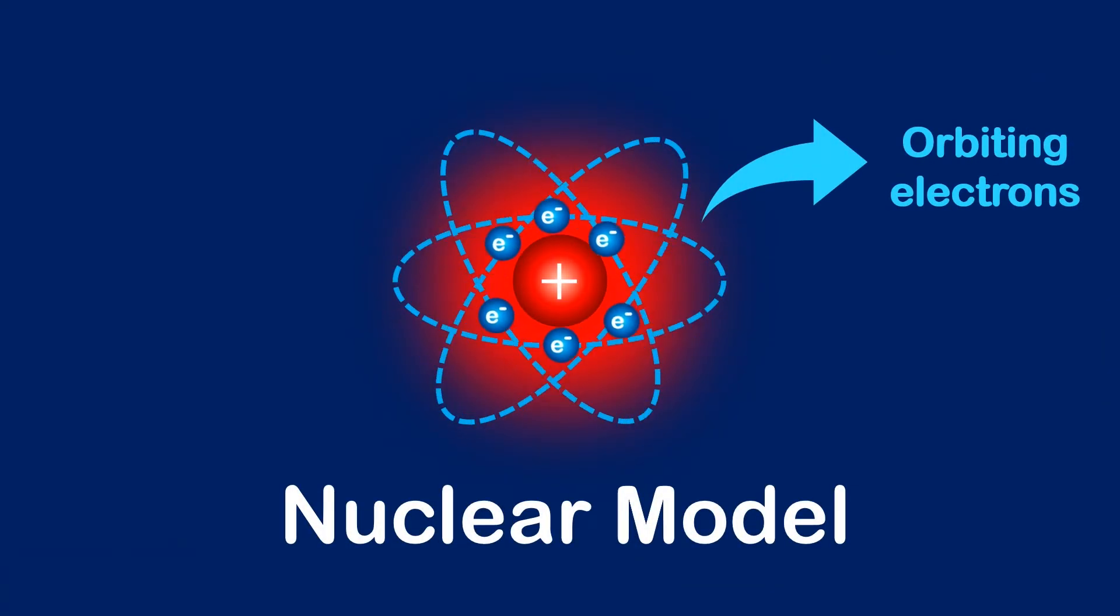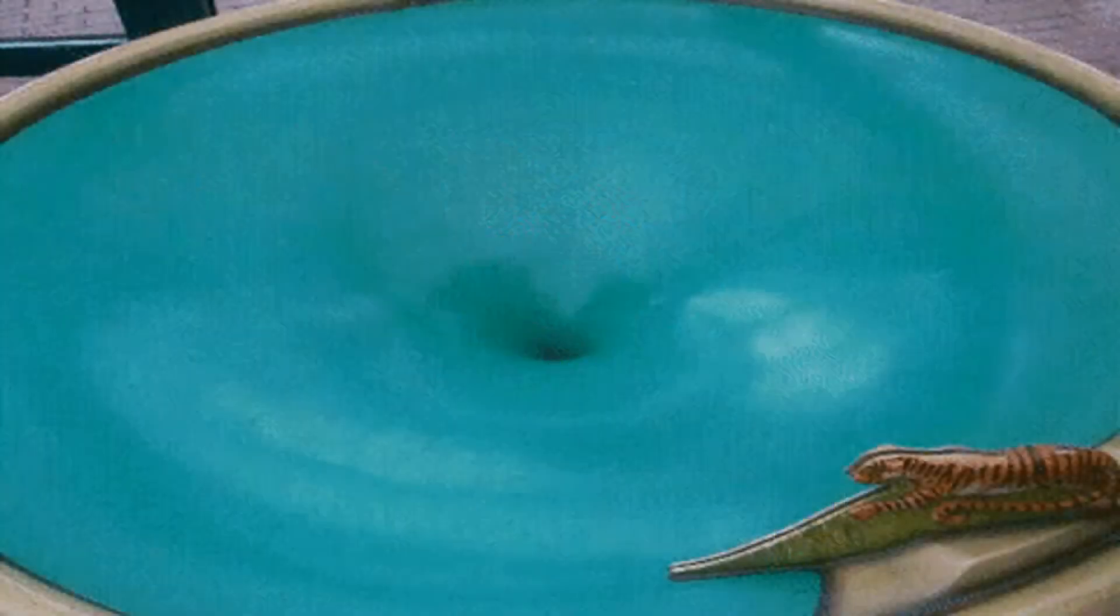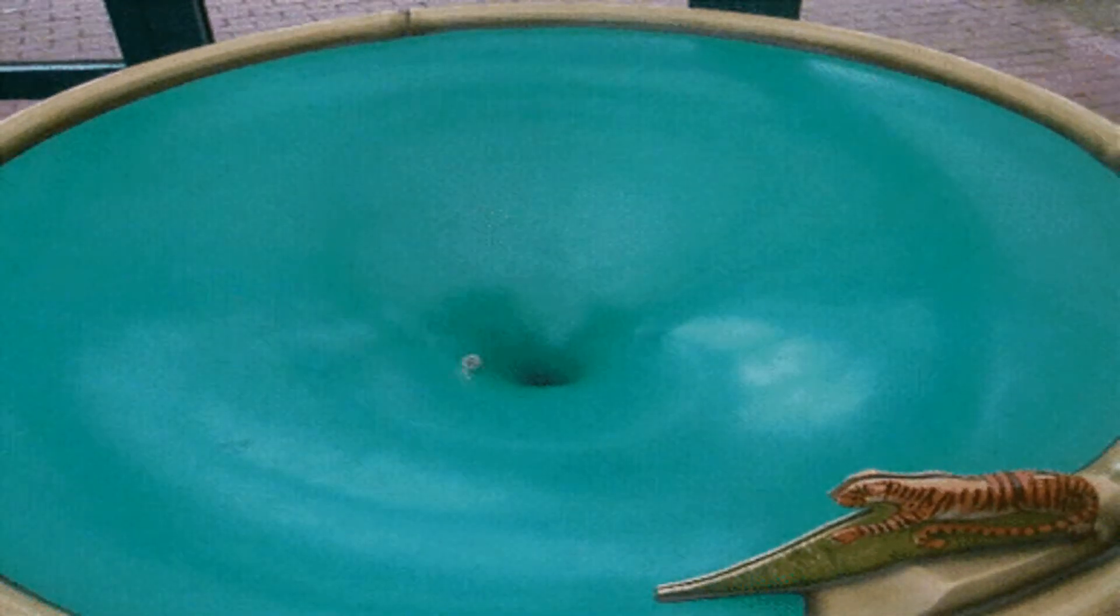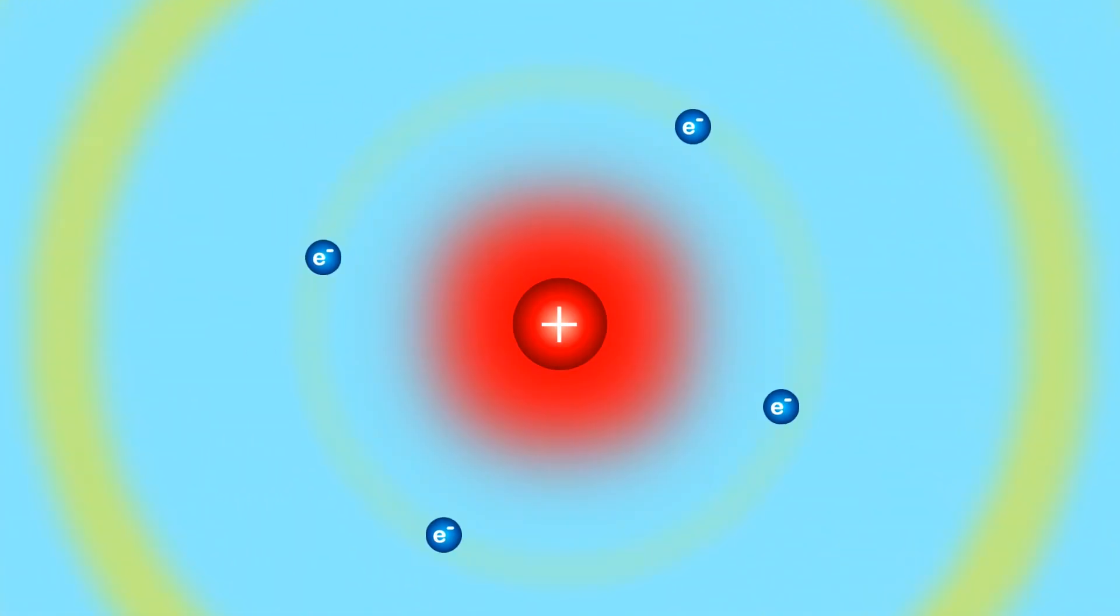with electrons orbiting the nucleus like planets orbiting the sun. But there was a problem with this model. In the same way that a coin loses energy as it spirals toward the center of a coin funnel, the orbiting electrons would quickly lose electromagnetic energy and would spiral toward the nucleus. In the nuclear model, atoms would collapse.